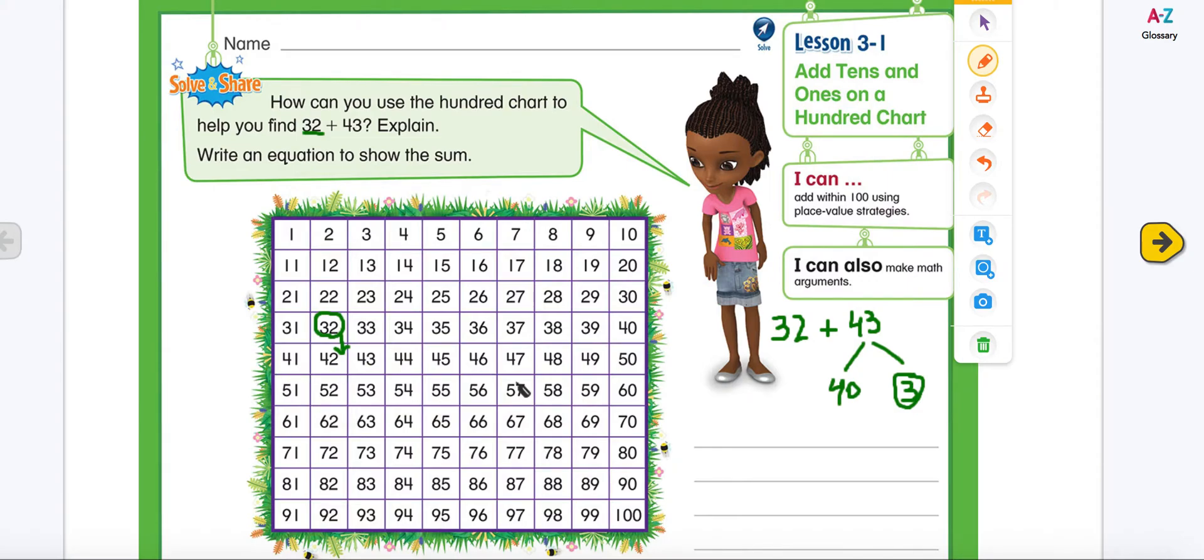But I am not done here. I have to add 4 tens. I only added 1 ten here. I'm going to add 1 more ten and that will take me to number 52. So I added 1 ten, 2 tens. I'm going to add 1 more ten. So now, I'm up to number 62. But I'm not done.